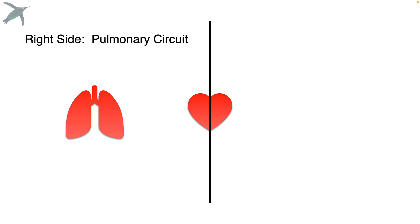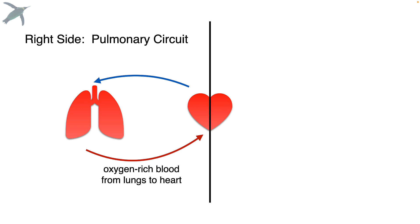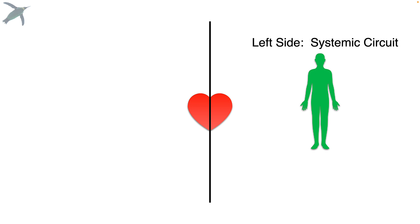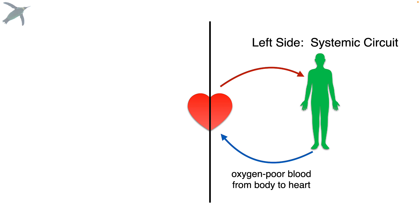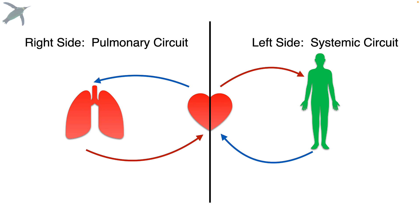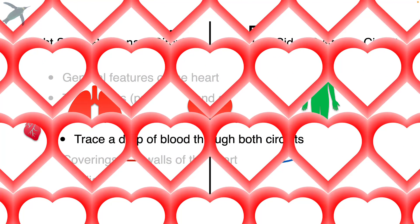Please don't miss points here. The right side is the pulmonary circuit, where oxygen-poor blood moves from the heart to the lungs, and oxygen-rich blood moves from the lungs to the heart. The left side is the systemic circuit, where oxygen-rich blood moves from the heart to the body, and oxygen-poor blood moves from the body back to the heart. The fact that we have four chambers allows for these two circuits to function independently, which is what makes our hearts so efficient.